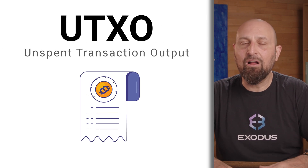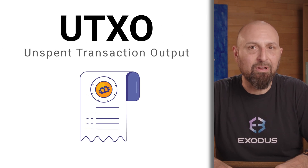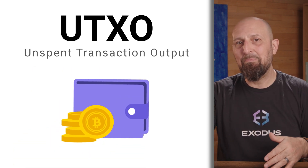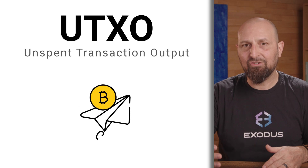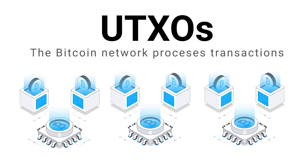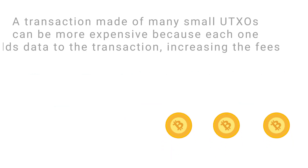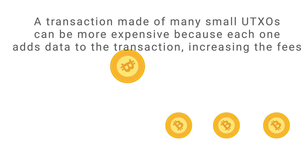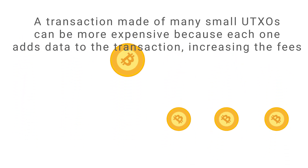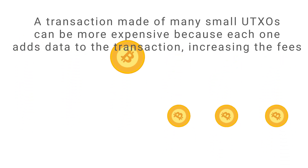You're probably wondering what a UTXO even is. UTXO stands for Unspent Transaction Output, and it's a record of both the amount of Bitcoin you received and the remaining balance after sending a transaction. When you send Bitcoin, each UTXO you use has to be processed by the network, which incurs a cost. A transaction made of many small UTXOs can be more expensive because each one adds extra data to the transaction, increasing your fees.